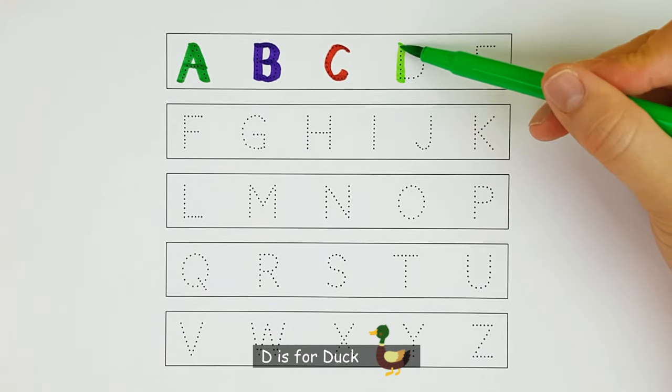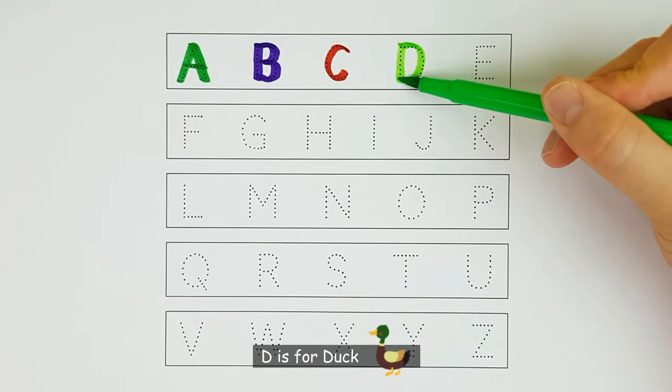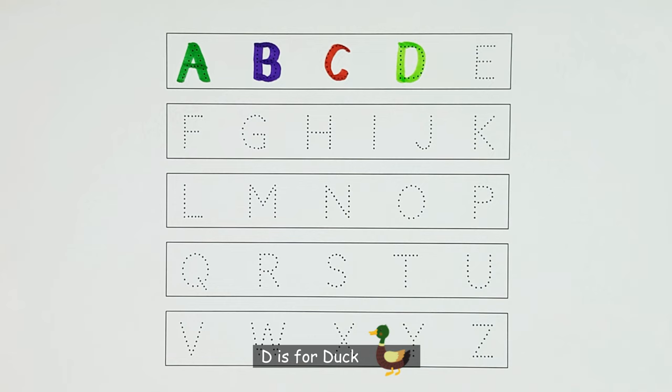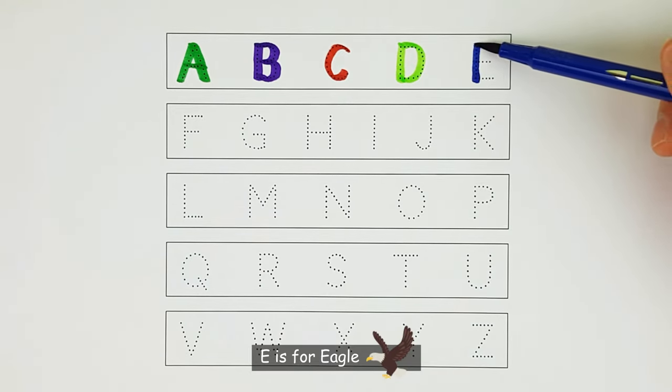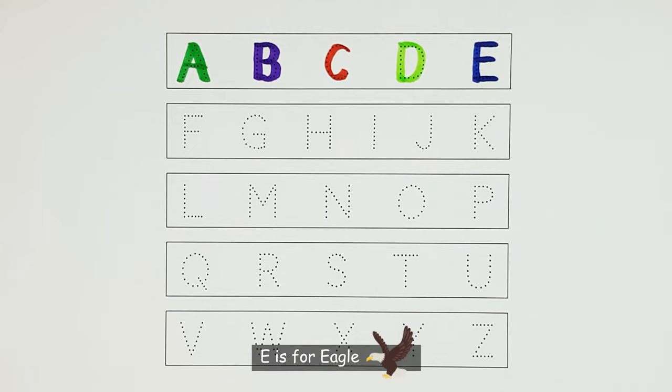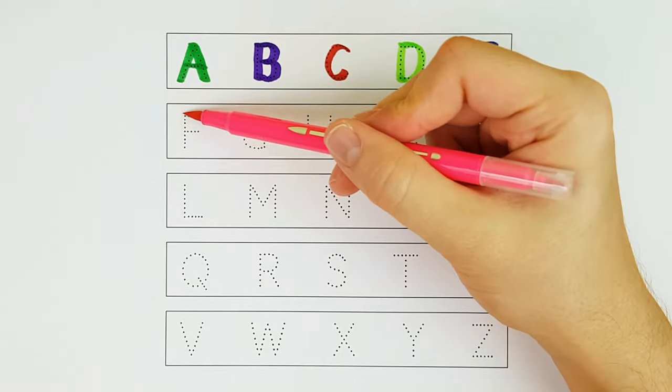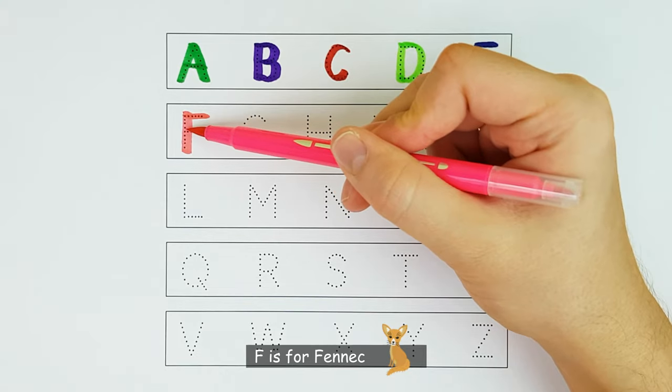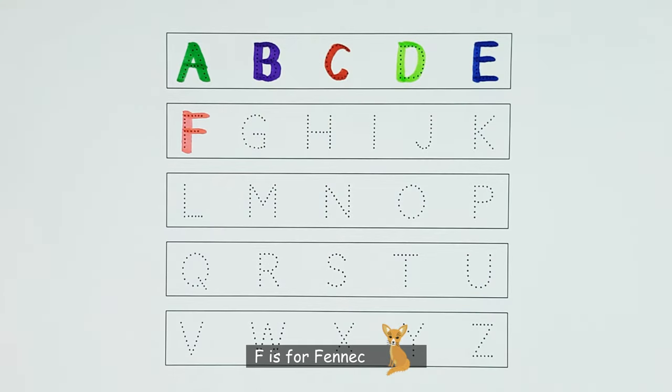D. D is for Duck. D. E. E is for Eagle. E. F. F is for Fennec. F.